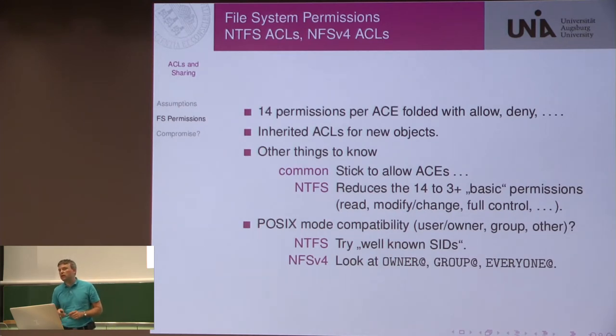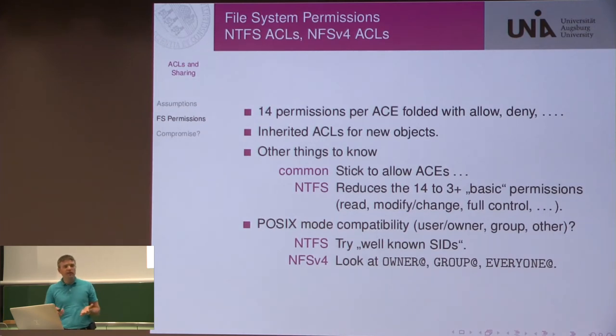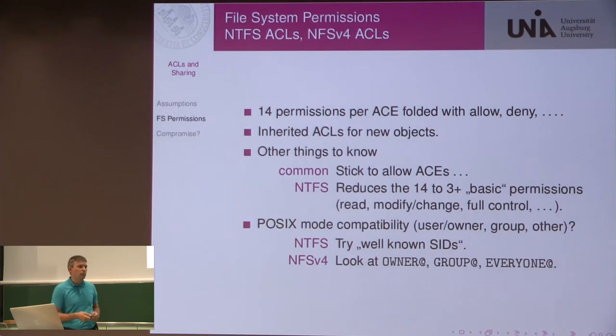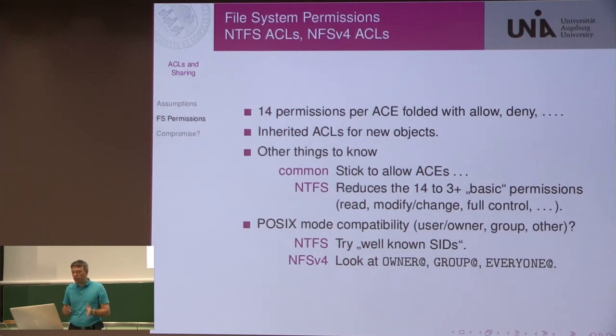I want to specifically talk about the NTFS and NFS v4 ACLs because they are so similar and because we are using them. NTFS ACLs introduced 14 permissions, combined with things like allow ACEs, deny ACEs, and audit and alarm. They have inherited ACLs for new objects, as you probably know. It is common sense to stick to allow ACEs, because otherwise you are lost. Windows reduces those 14 permissions down to three basic permissions: read, modify or change — so read and write — and full control. They also have a few things to comply with POSIX mode.